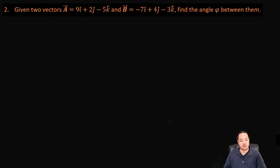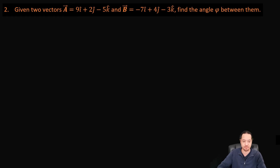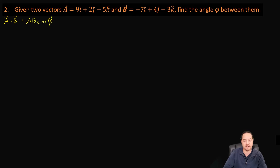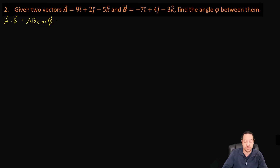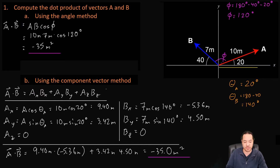Let's look at question number two. For question two, we are given two vectors A and B, and we want to find the angle phi between them. We know that A dotted with B is equal to the magnitude of A times the magnitude of B times the cosine of the angle between them. We also know that A dot B is equal to AX BX plus AY BY plus AZ BZ.